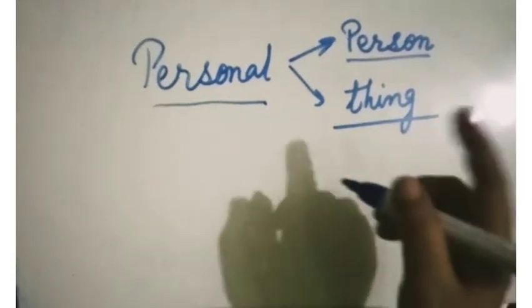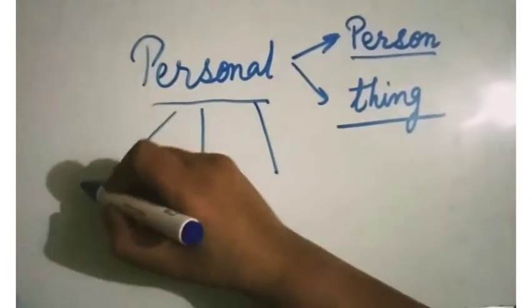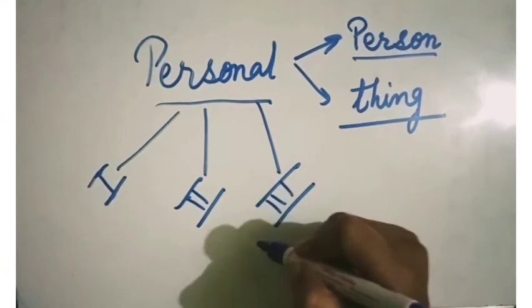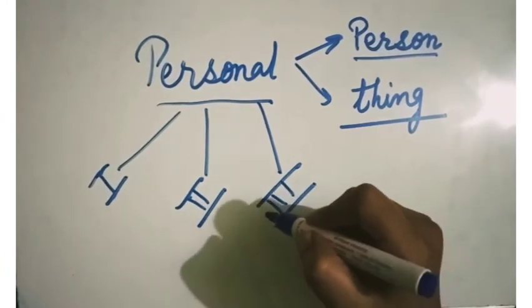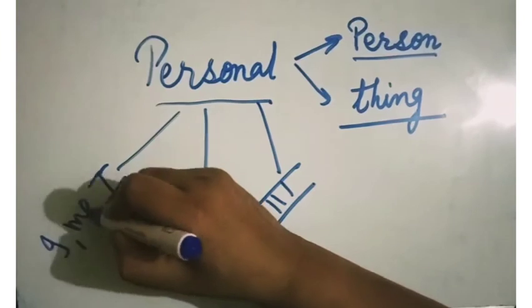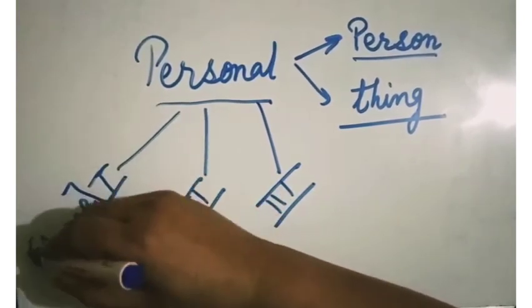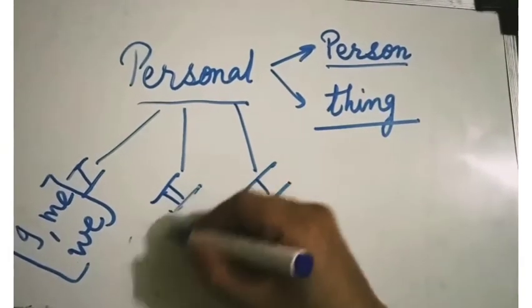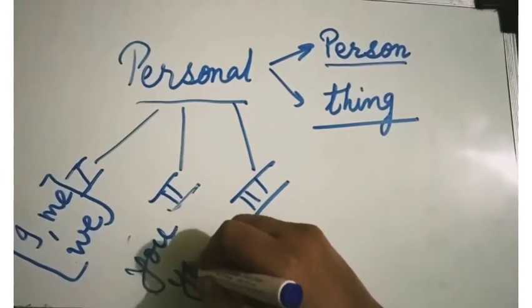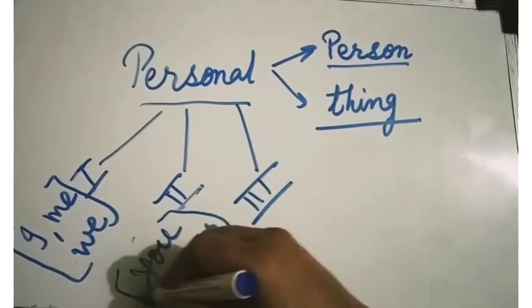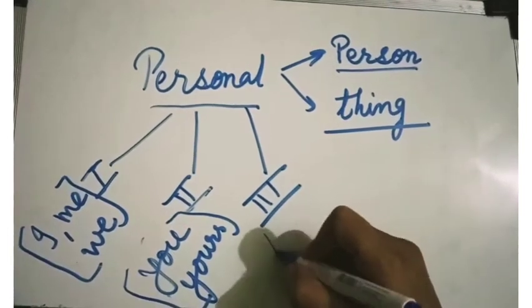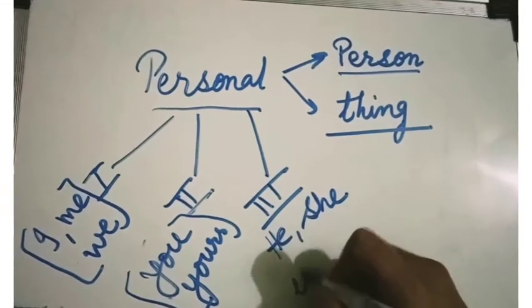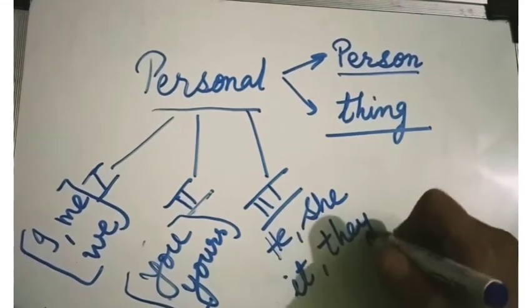There are three personal pronouns. First person: I, me, we, myself, our. Second person: you, yours. Third person: he, she, it, they. Personal pronouns are of three types: first person, second person, and third person.